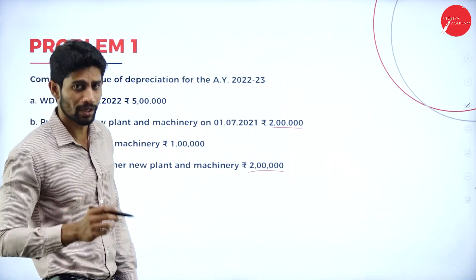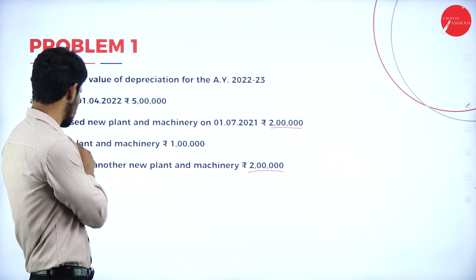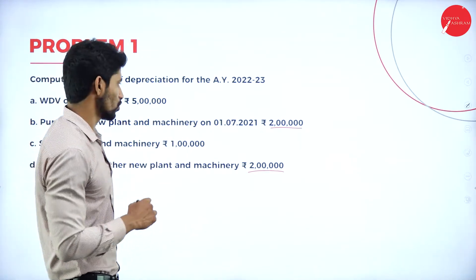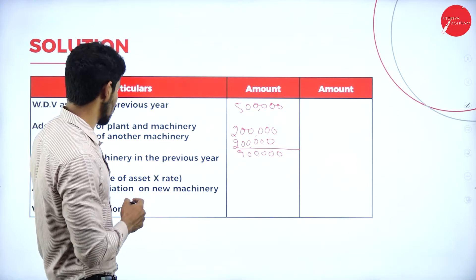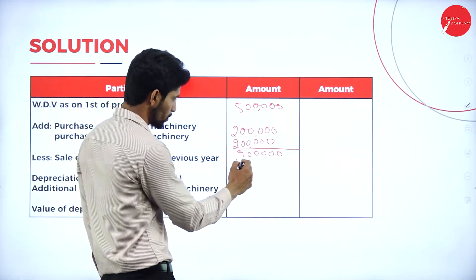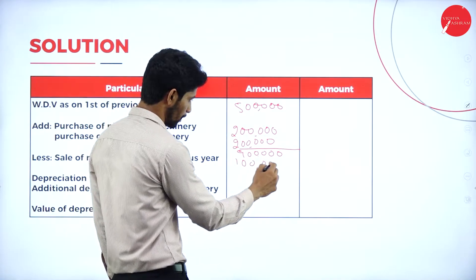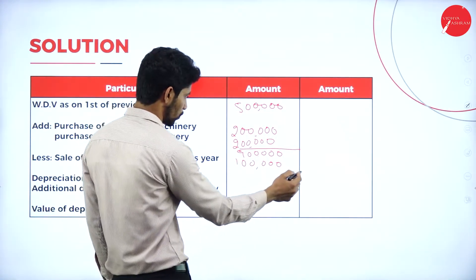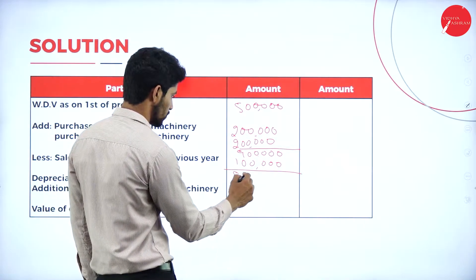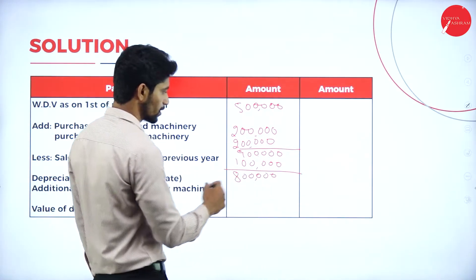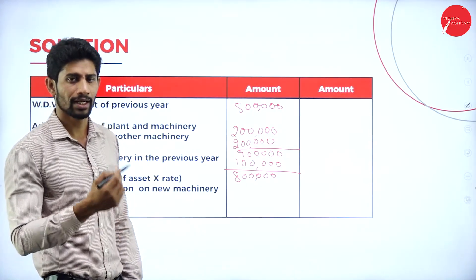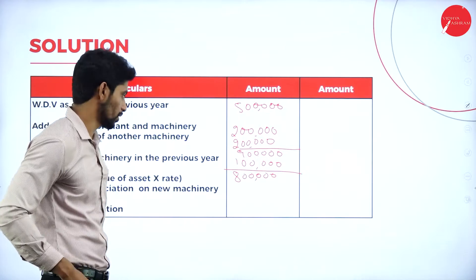Check whether any machinery is sold in the previous year. Yes, there is a sale of plant and machinery of Rs. 1 lakh. So deduct that 1 lakh — sale of machinery in the previous year, Rs. 1 lakh. The balance you will get is 8 lakh rupees. On 8 lakh rupees, you are supposed to calculate the rate of depreciation.